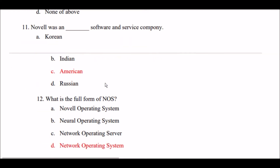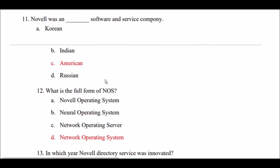Next question: Novell was a blank space software and service company. Option A: Korean. Option B: Indian. Option C: American. Option D: Russian. The right answer is Option C — Novell was an American software and service company.